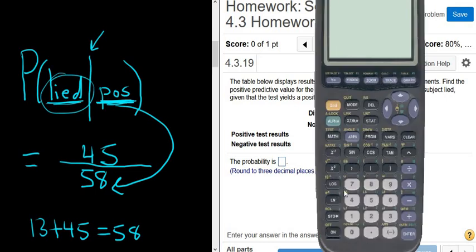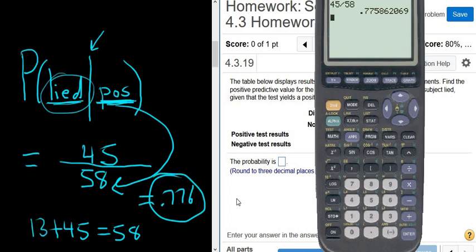So let's do it. It's 45 out of 58. It looks like it wants three decimals in the problem. So it would be 0.776.